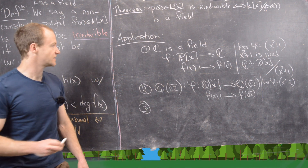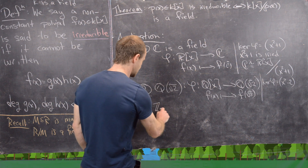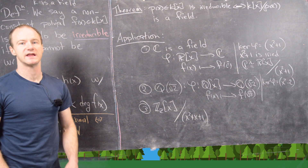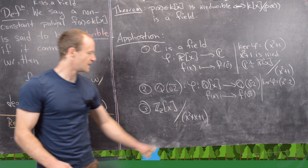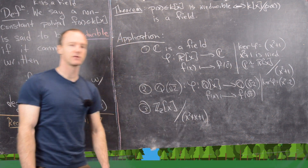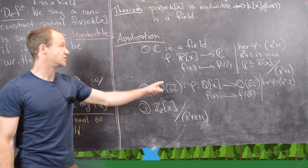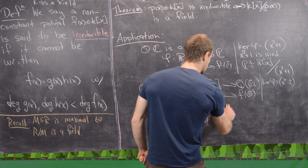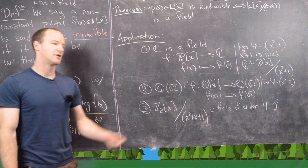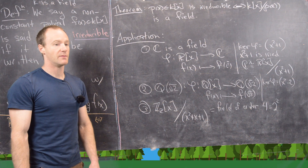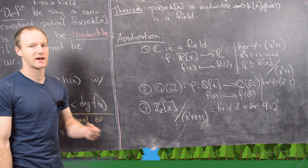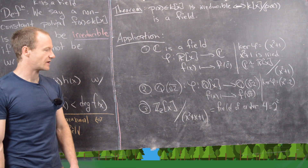A more interesting example: consider ℤ₂[x] mod (x² + x + 1). We can check that x² + x + 1 is irreducible by verifying that 0 is not a root and 1 is not a root — that's all we need to check in ℤ₂. So it is irreducible, and a field adjoined x mod an irreducible polynomial is always a field. This gives a field of order 4, which is 2². This works into the important result that all finite fields are of order a power of a prime, which is generally seen in a later abstract algebra course. So this is a good place to stop.